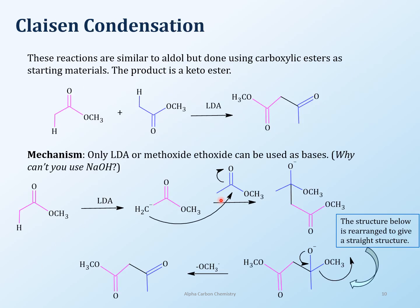Another reaction very common for alpha carbons is the Claisen condensation. Claisen condensation is specifically for carboxylic esters — we are out of aldehydes and ketones and now into the carbonyl of the ester. The same kind of thing happens: you have an alpha carbon with a proton, treat with a base, and get a carbon-carbon bond formation. You can see there's only one ester remaining in the product — the other ester is gone. LDA is used as the base here, not sodium hydroxide.